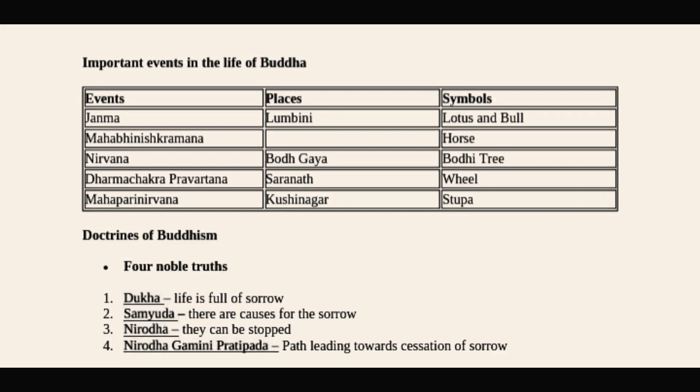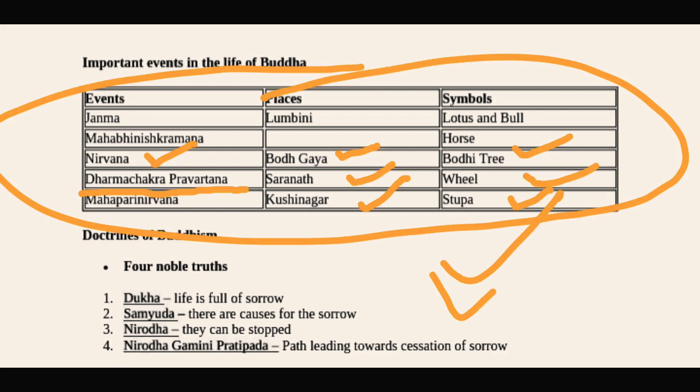The important events in the life of Buddha are organized into three columns: events, places, and symbols. First, Janma was in Lumbini, symbol: lotus and bull. Second, Mahabhinishkarmana, symbol: horse. Third, Nirvana at Bodhgaya, symbol: Bodhi tree. Fourth, Dharmachakra Parivartana at Sarnath, symbol: wheel. Last, Mahaparinirvana at Kushinagar, symbol: stupa.